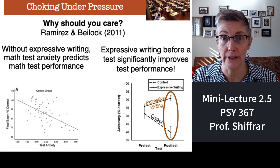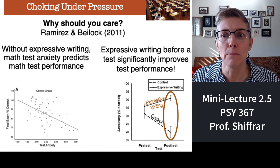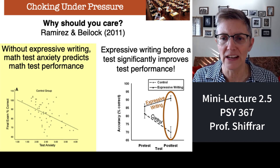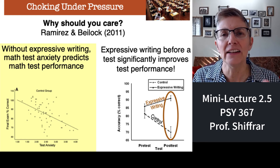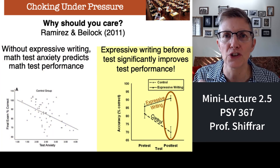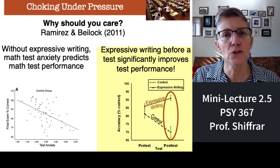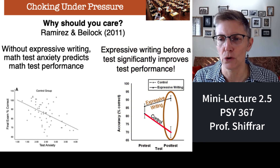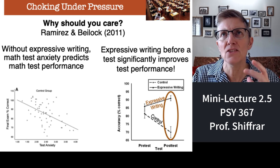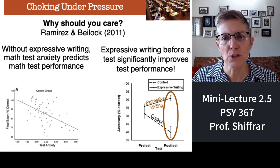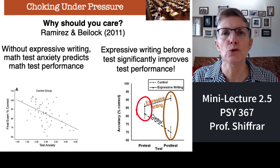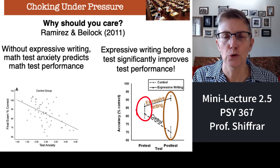We know this from a study available on Canvas, done at UCLA in a math class. The graph on the left shows a strong correlation between test anxiety and final exam performance — the more anxious people were, the lower their performance. In the experimental data on the right, there are two lines: expressive writing and control. Everyone walked in and was given an initial no-pressure test, and there was no significant difference in performance between the two groups on that pre-test.